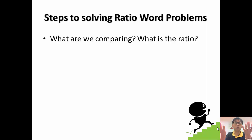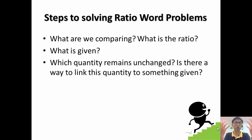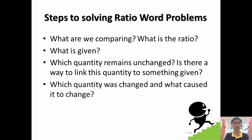The first thing is asking yourself, what are we comparing? Are we comparing cookies or muffins and all these things? And what is that ratio that is given? Question two: what is given? What is the quantity that is given? Usually something is given and something is not given, so you need to identify that as well. The third thing is asking yourself, which quantity remains unchanged?